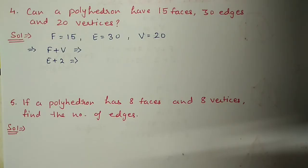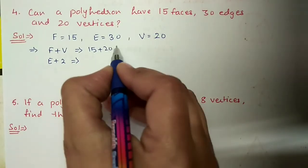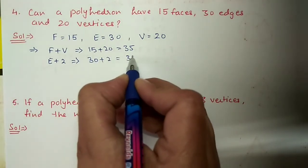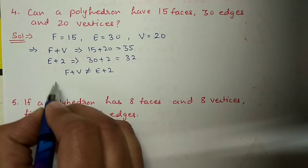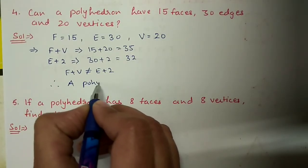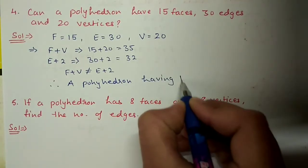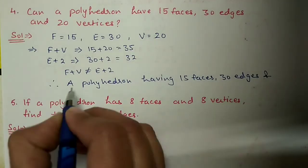Question number 4: Can a polyhedron have fifteen faces, thirty edges and twenty vertices? We will use Euler's formula. If these values satisfy the formula then it is possible, otherwise not. Faces are fifteen, vertices are twenty: 15 plus 20 equals 35. Edges are thirty: 30 plus 2 equals 32. Because F plus V is not equal to E plus 2, this is not possible. Therefore a polyhedron having fifteen faces, thirty edges and twenty vertices is not possible.